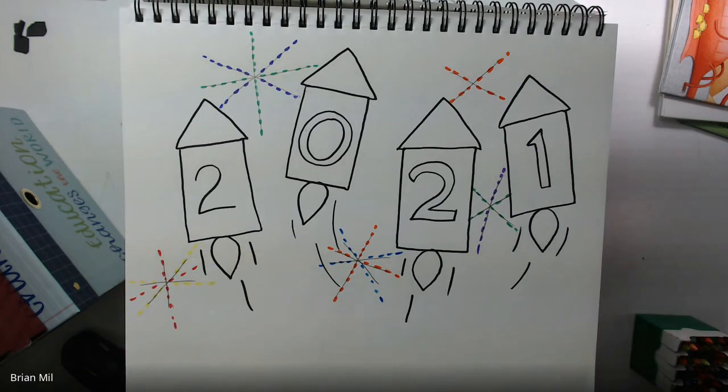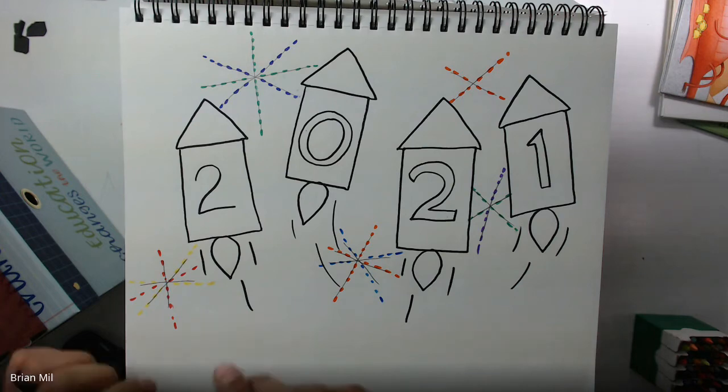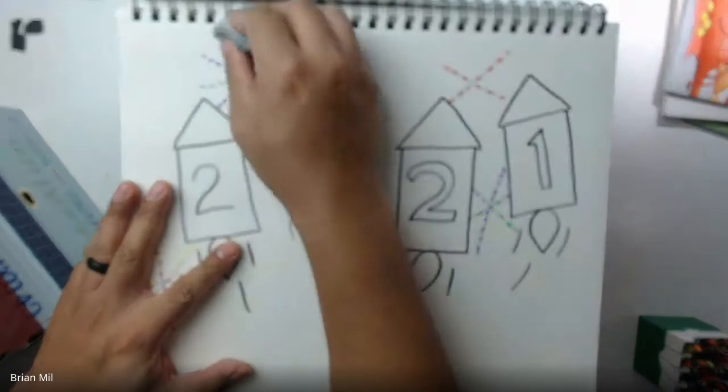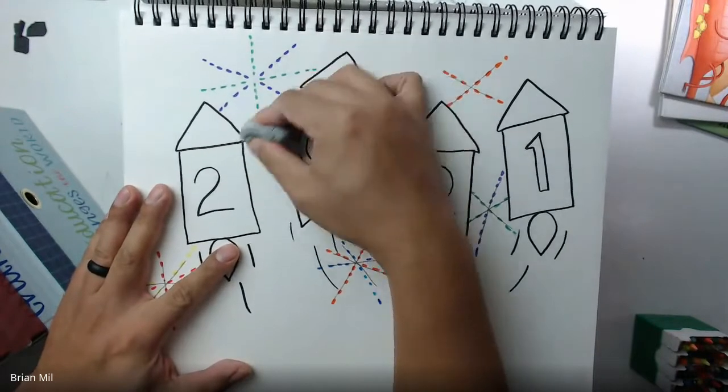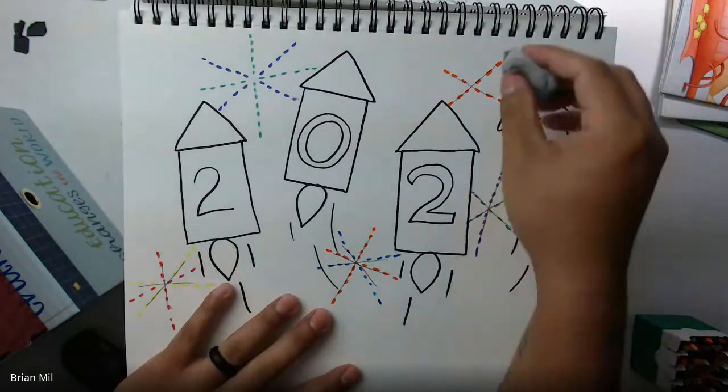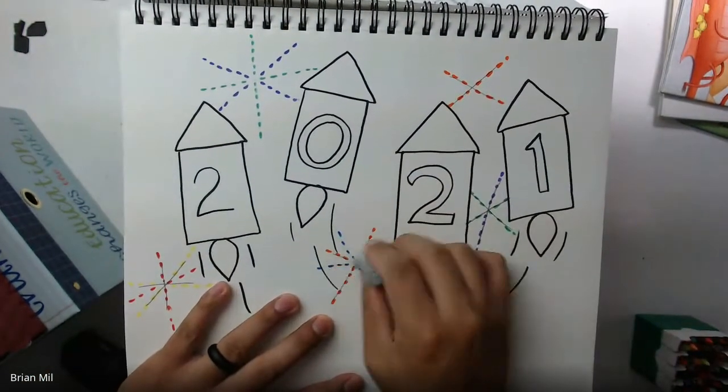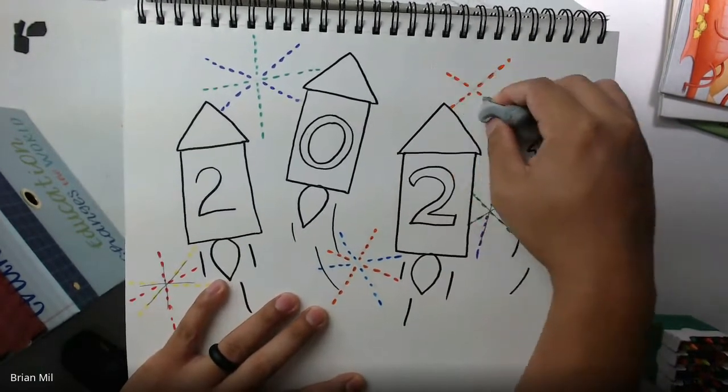Alright, now I can go back to my eraser and start erasing my pencil lines starting with the first one I did. So now it looks nice and clean. There we are.